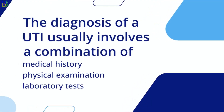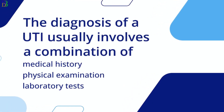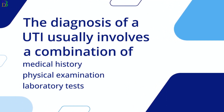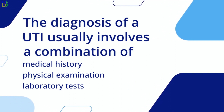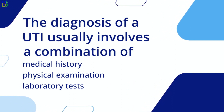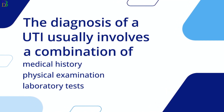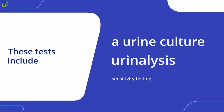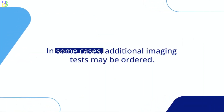The diagnosis of a UTI usually involves a combination of medical history, physical examination, and laboratory tests. These tests include a urine culture, urinalysis, and sensitivity testing. In some cases, additional imaging tests may be ordered.